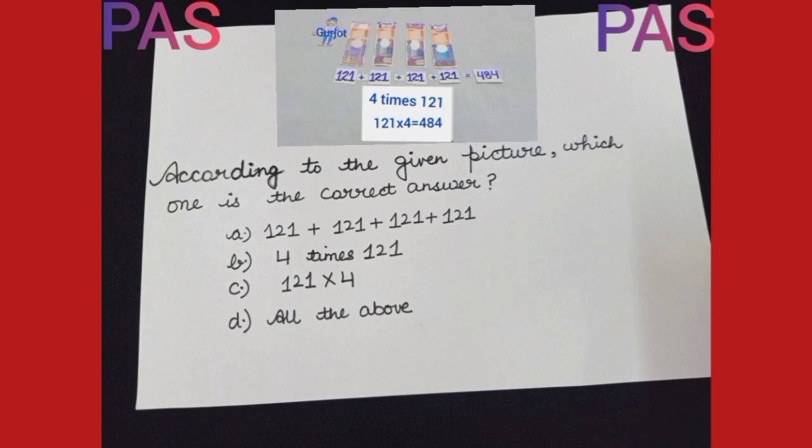Option B, we can write option A as 4 times 121. So option B is also correct.